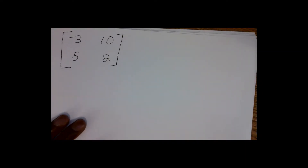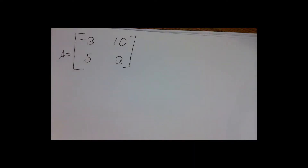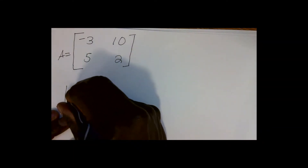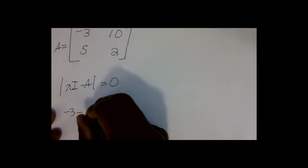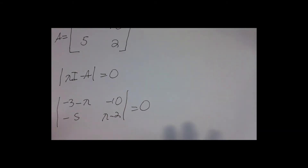So you can see here I have a 2×2 matrix — let's call this matrix A. Let's go about the process of finding the characteristic equation in the same manner as the Part 1 video. To remind you of that method, the first thing we do is take the determinant of λI minus A and set that determinant equal to 0. So λI minus A gives us the matrix with entries: (−3−λ), −10, −5, (λ−2). We take the determinant of that matrix and set it equal to 0.